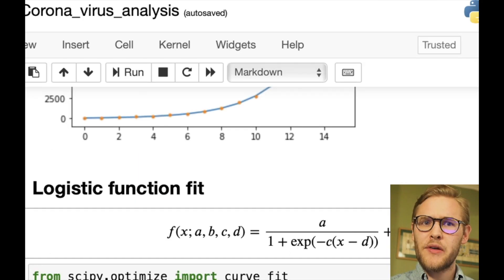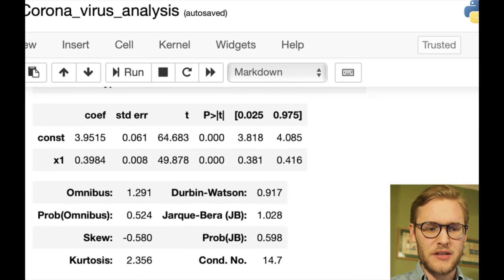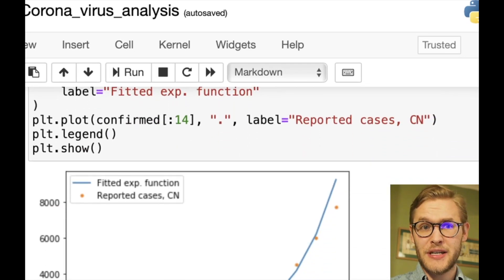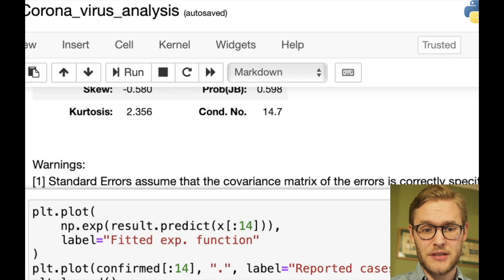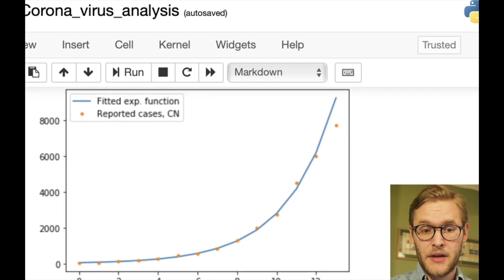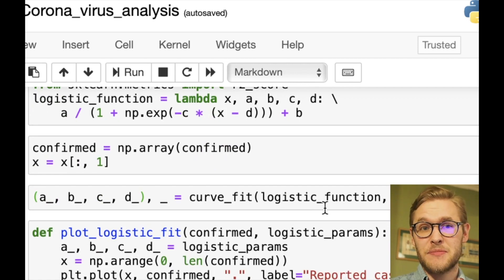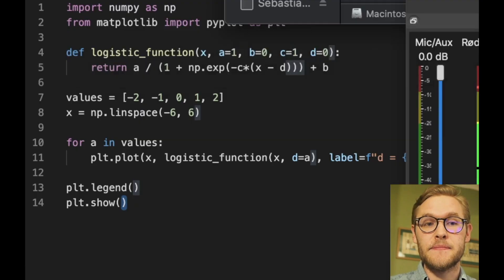A lot of countries haven't gotten far enough to actually be a good fit to a logistic function. A few weeks ago I made this Jupyter notebook where I started fitting to the China data first with an exponential function using stats models, and then afterwards with the logistic function. You can have a look at it if you like, it's on my GitHub.